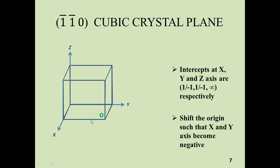When you move in this direction, this is the negative y-axis; when you move in this direction, this is the negative x-axis; but the z-axis is still positive. The four negative x-axis directions are: this one, this one, this one, and this one. The four negative y-axis directions are: this one, this one, this one, and this one. You get two types of corners: two corners that have two arrows, and four corners that have a single arrow. Join the four single-arrow corners and you get a rectangle — that is your (1̄1̄0) cubic crystal plane.